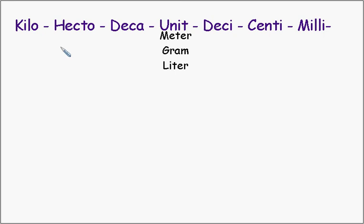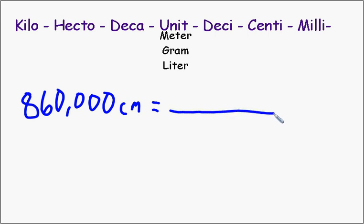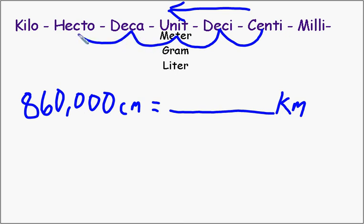Let's try, let's do a big jump here. Let's do centimeters. Let's say I have 860,000 centimeters. And I wanted to convert that equals blank kilometers. So which way am I moving on my line here? I'm moving to the left. So if I move on this to the left, I'm moving the decimal to the left. But how many places from centi to kilo or kilometer? One, two, three, four, five.